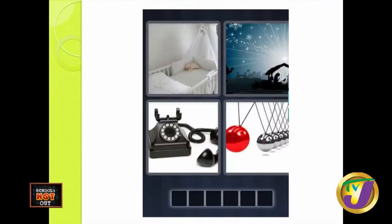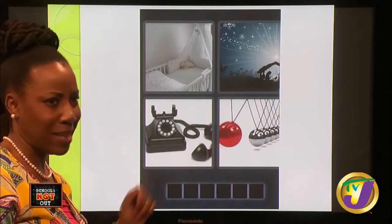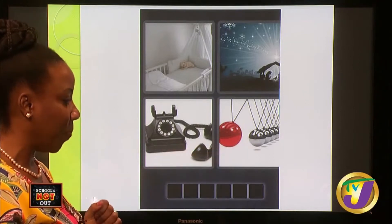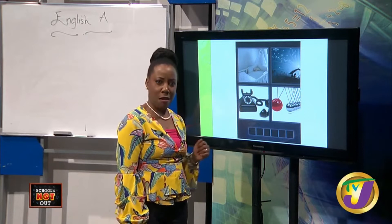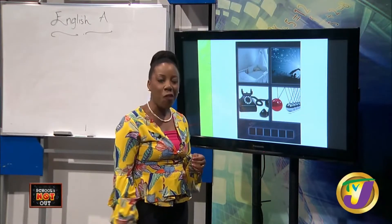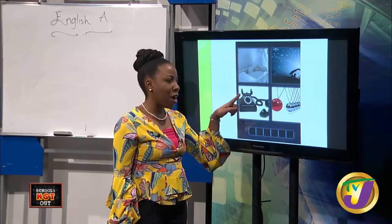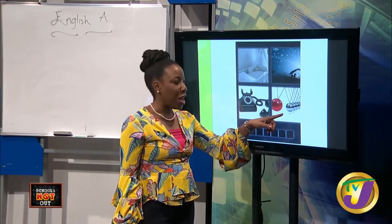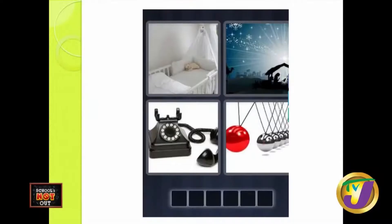For the final four pics one word: we have a crib, a picture mimicking the manger, a telephone off its hook, and some balls. It's a six-letter word beginning with C. If you came up with cradle, you are correct. The crib is a cradle for babies, the manger scene conveys the same idea, that part of the telephone is called a cradle, and for the scientifically knowledgeable — Newton's cradle balls involve the concept of energy conservation and momentum.